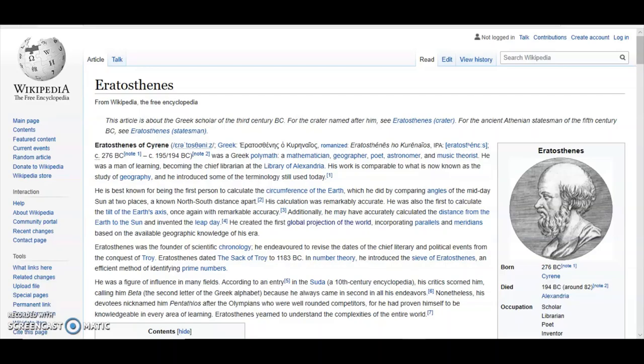They claim that the first person to create a globe and then incorporate parallels and meridians was Eratosthenes. Yeah, that's right, that guy who measured the distance to the sun and the circumference of the earth using two sticks on the ground. It says he created the first global projection of the world, incorporating longitude and latitudes. No he did not.